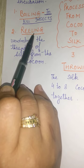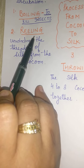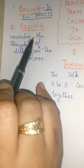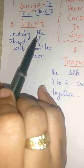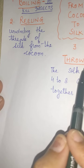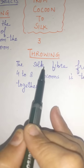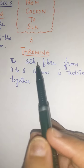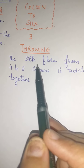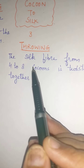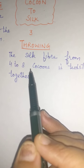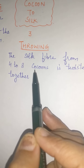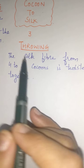The second process is reeling. In this process, taking out threads from the cocoon is called reeling. The next process is called throwing. The fiber from 4 to 8 cocoons is joined and twisted together. This prevents the silk from splitting into individual fibers. That is called throwing.